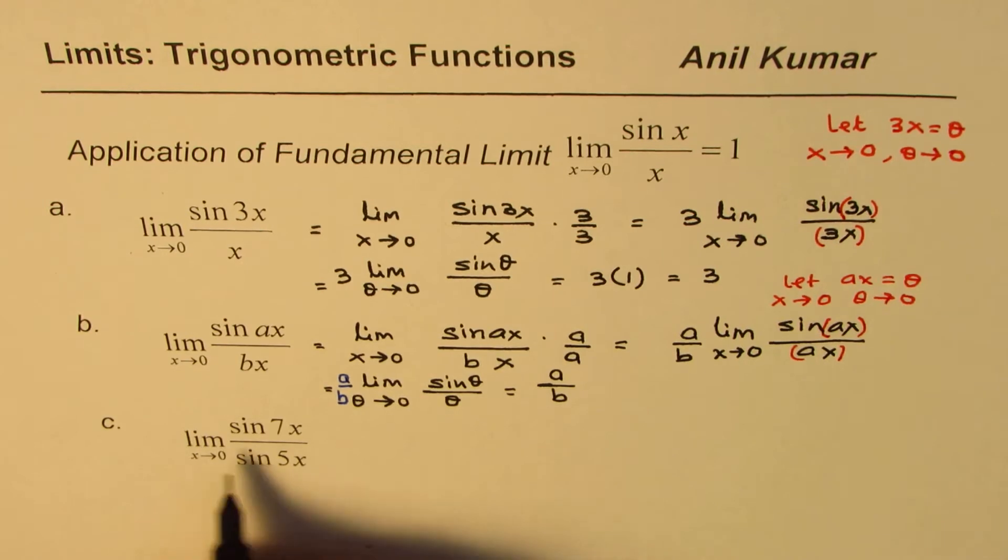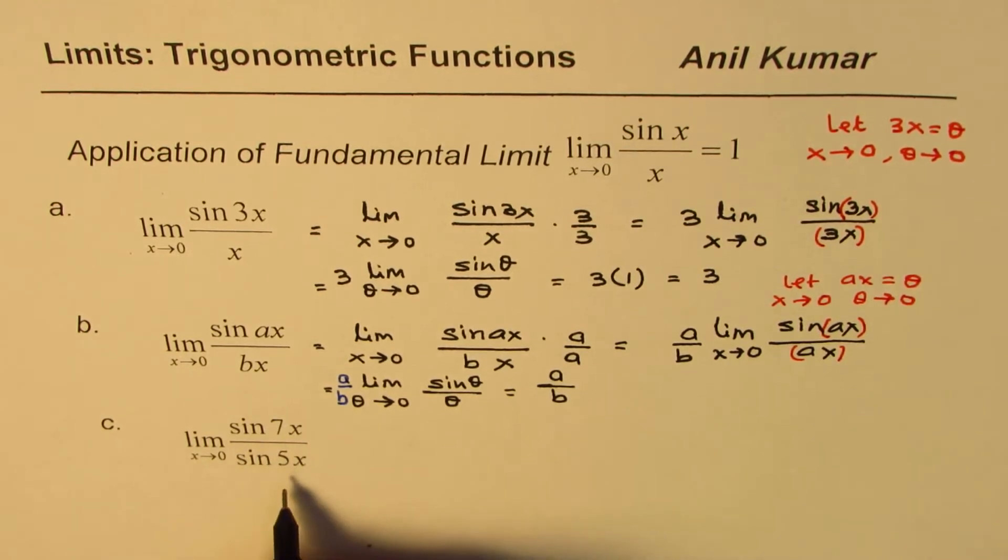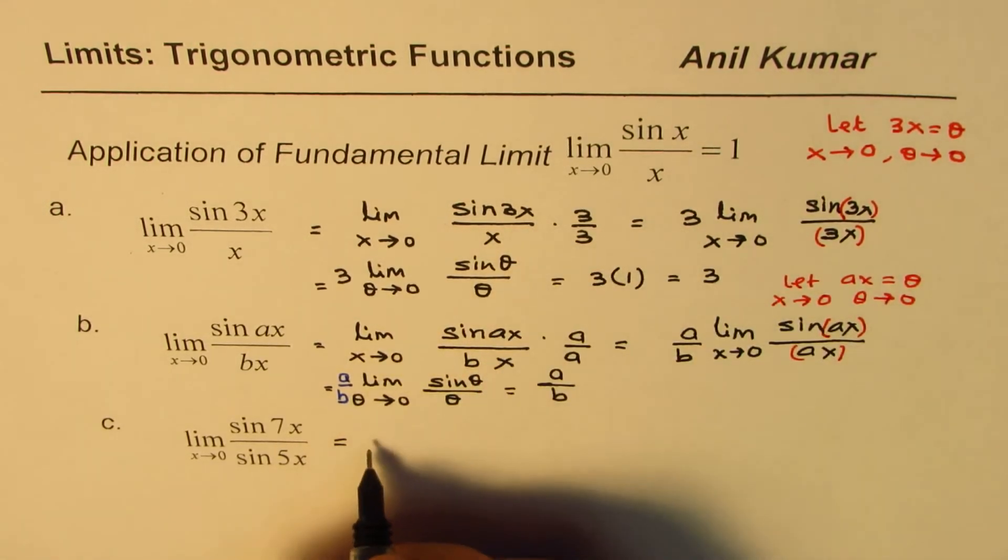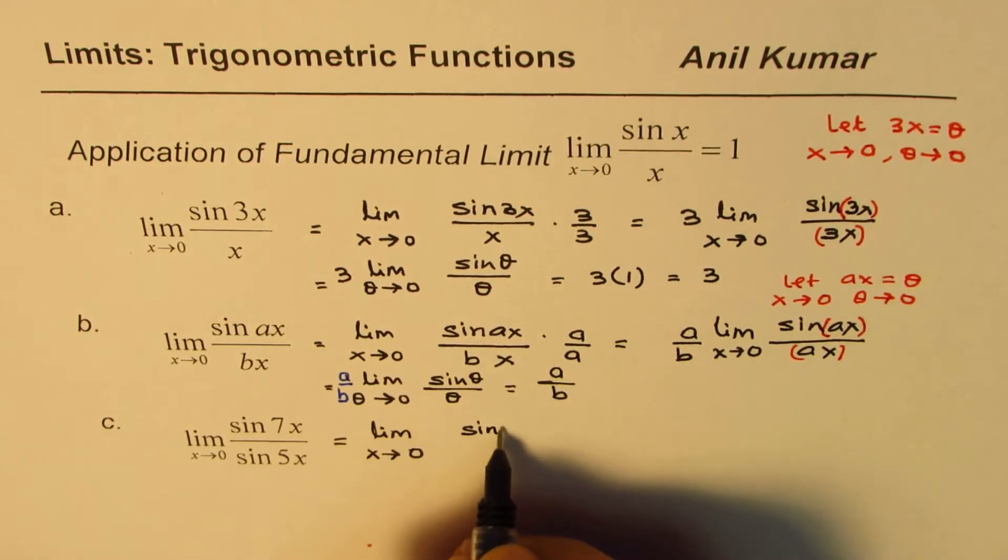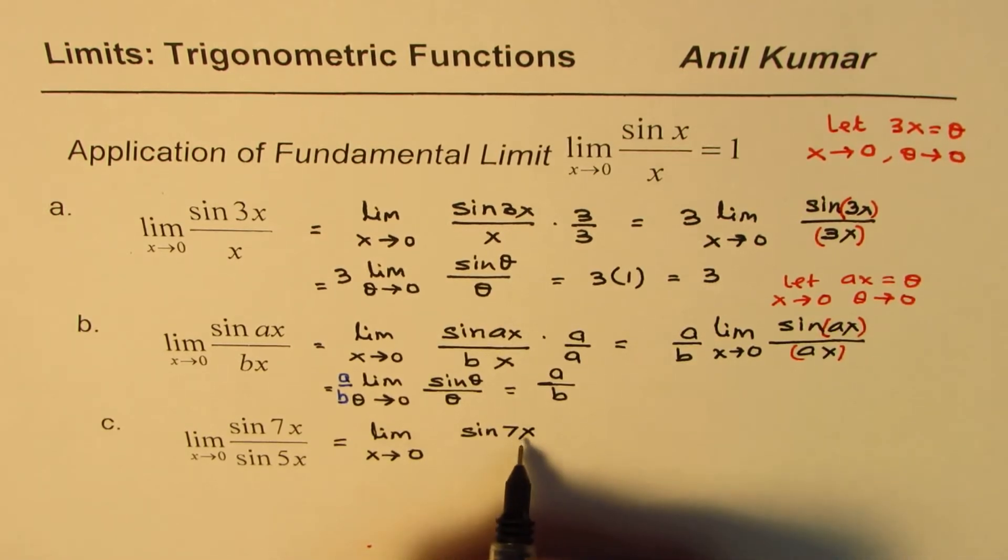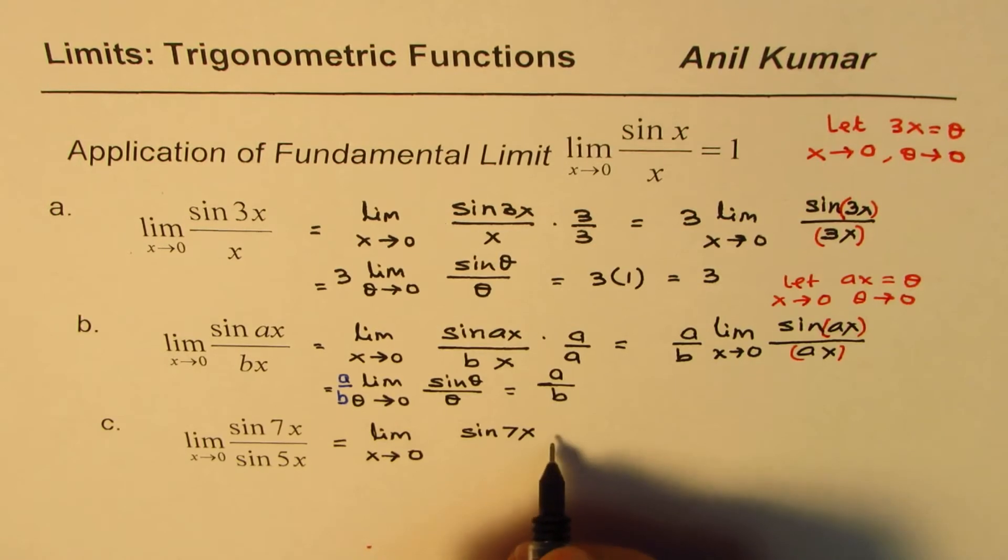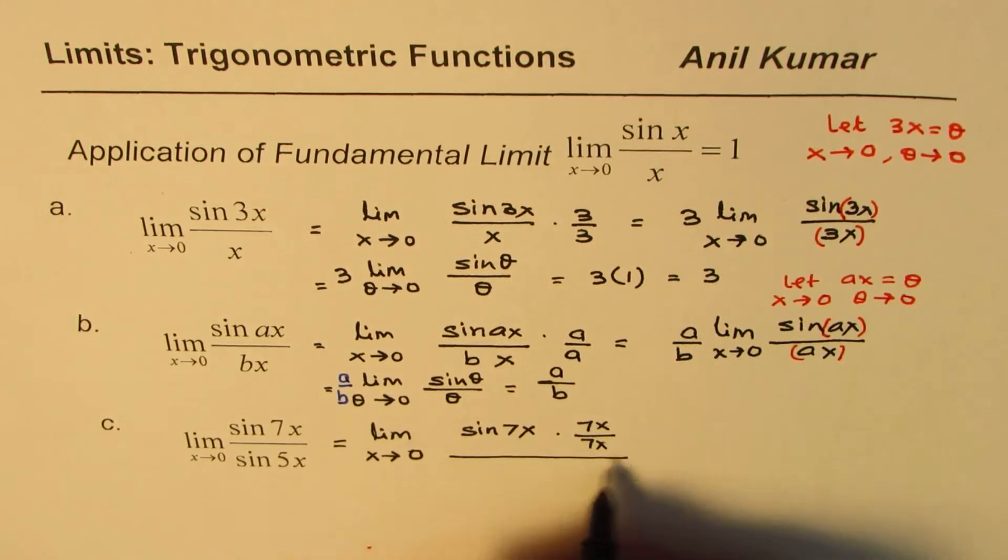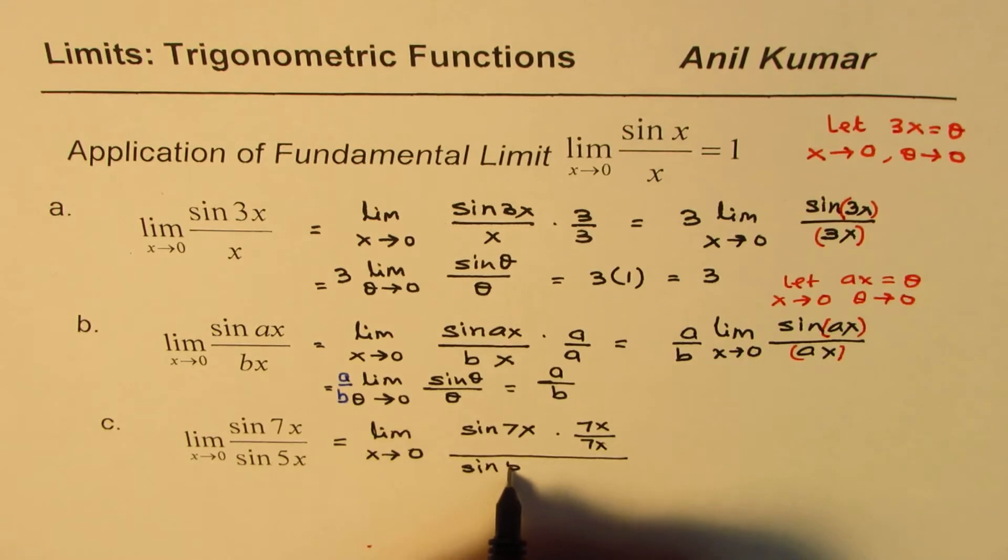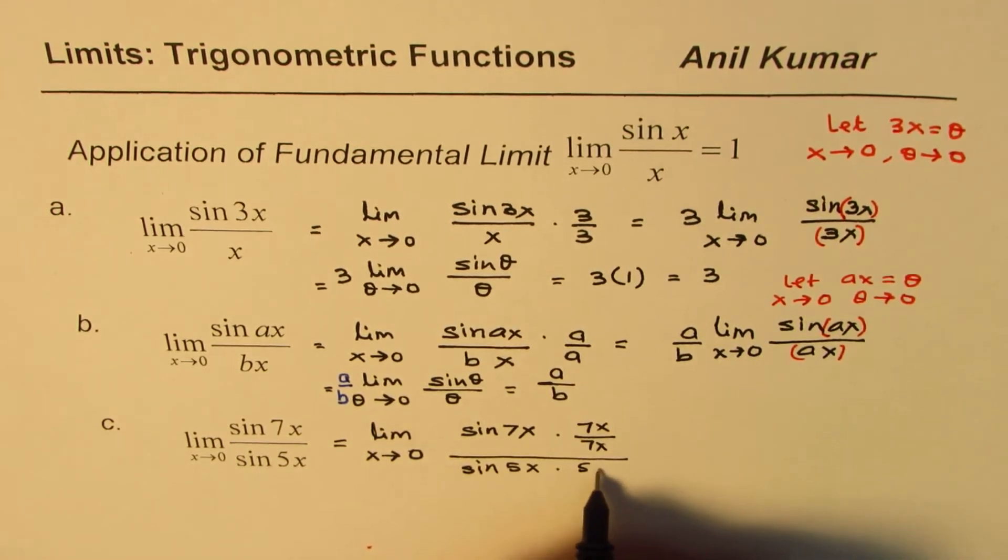Now, let's look into part c, which is limit sine 7x over sine 5x. You can pause the video and answer the question. The answer should be 5 over 7 or something like that. Let's see what it could be. Follow the same steps. What we have here is limit x approaches 0. And we have sine 7x. I need to divide this by 7x. So what I will do here is I'll multiply and divide by 7x. And the denominator, I have sine 5x. Let me divide and multiply this by 5x.